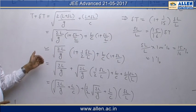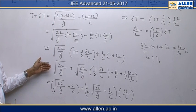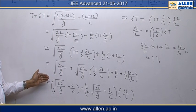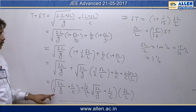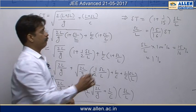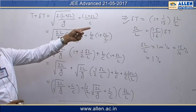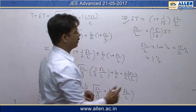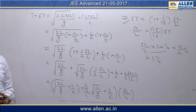Finally after manipulation of this expression which you can see subsequently and substituting the given numerical values, we find out delta t equal to this value, and finally percent error becomes 15 by 16 percent which is approximately 1 percent. So answer is 1 percent.